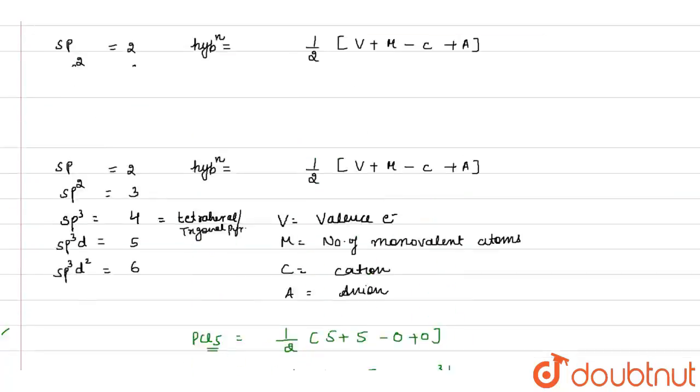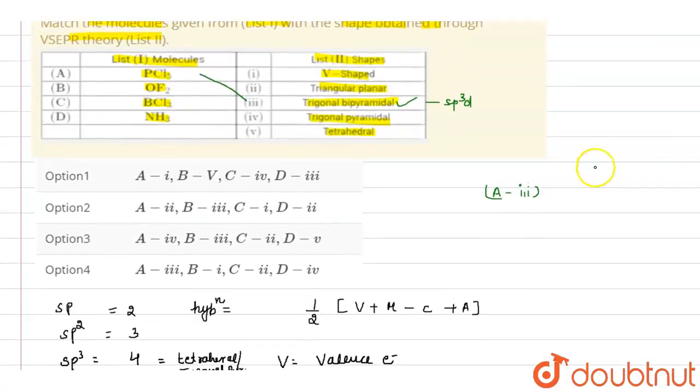So if it is bent or V-shape, according to that, OF2 matches with option number 1.